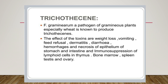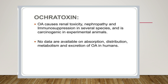Third, trichothecins: Fusarium graminearum, a pathogen of gramineous plants including wheat, is known to produce trichothecins. The effects include weight loss, vomiting, feed refusal, dermatitis, diarrhea, hemorrhages, and damage to the epithelium of the stomach and intestine, as well as immunosuppression of lymphoid cells in the thymus, bone marrow, spleen, testis, and ovary.